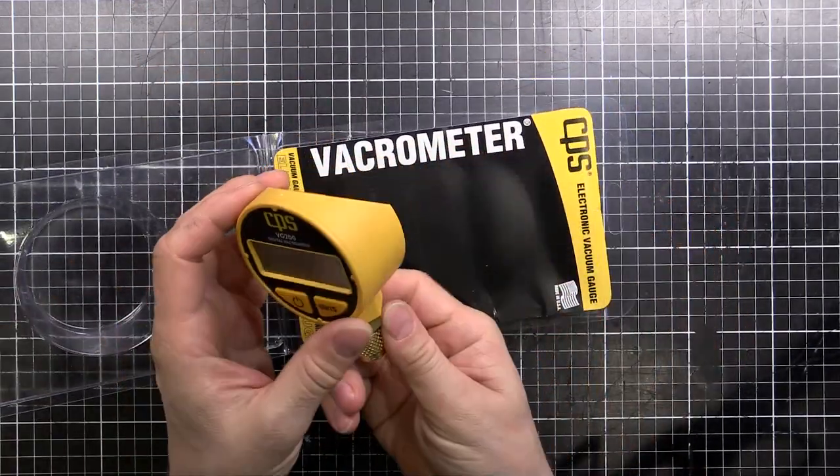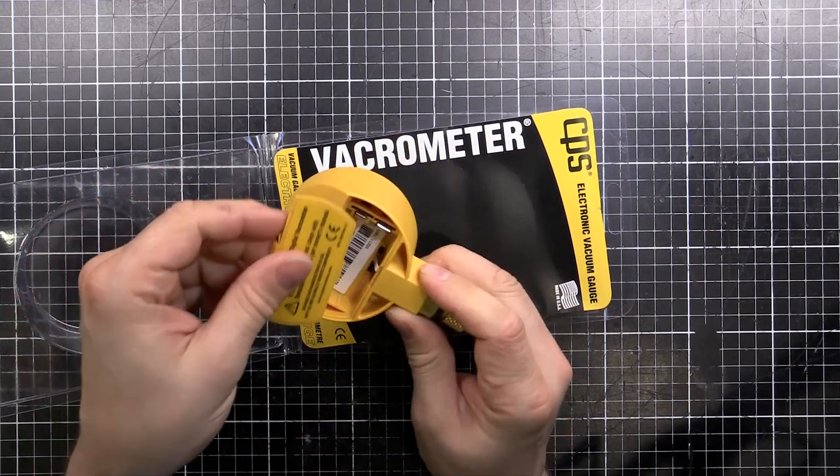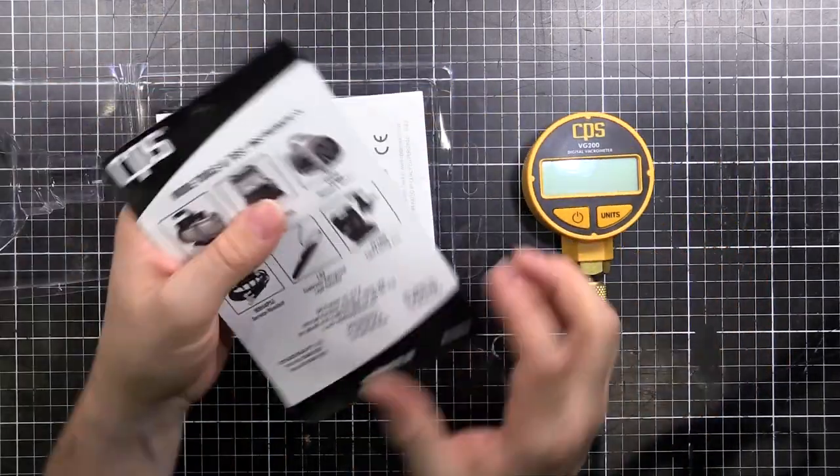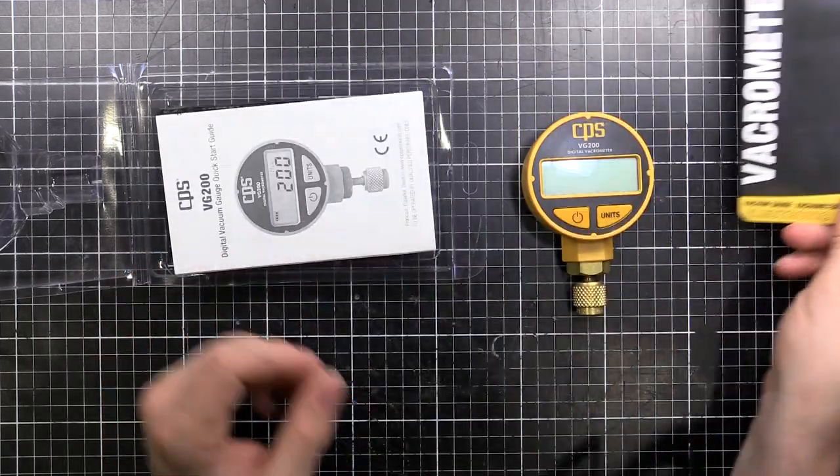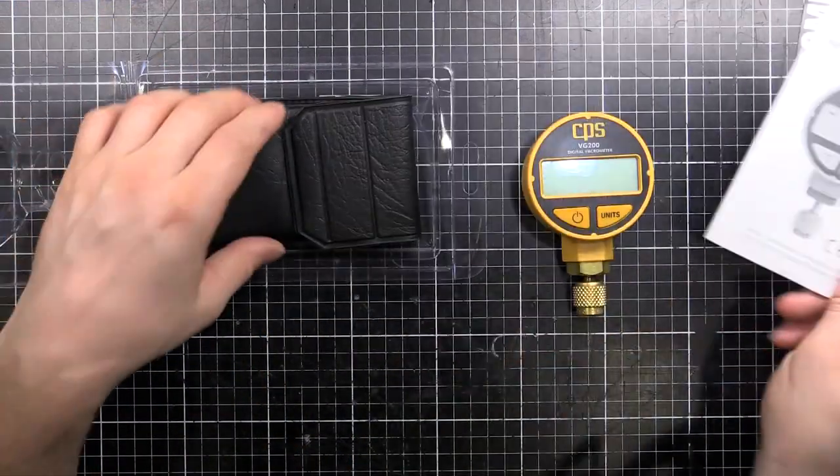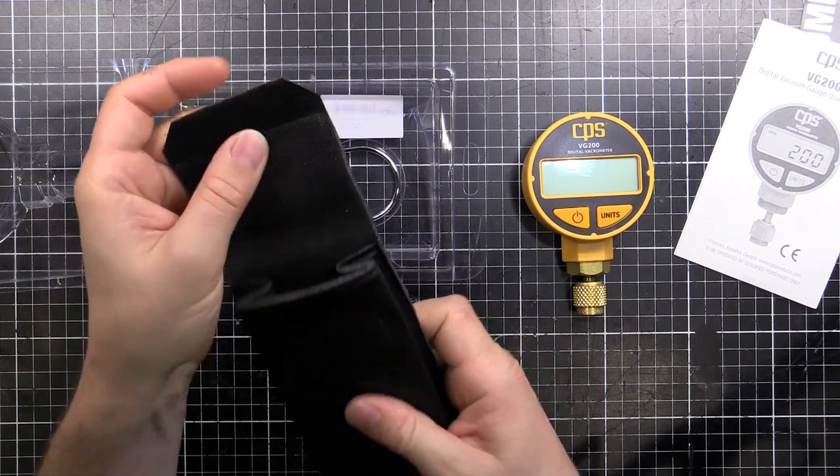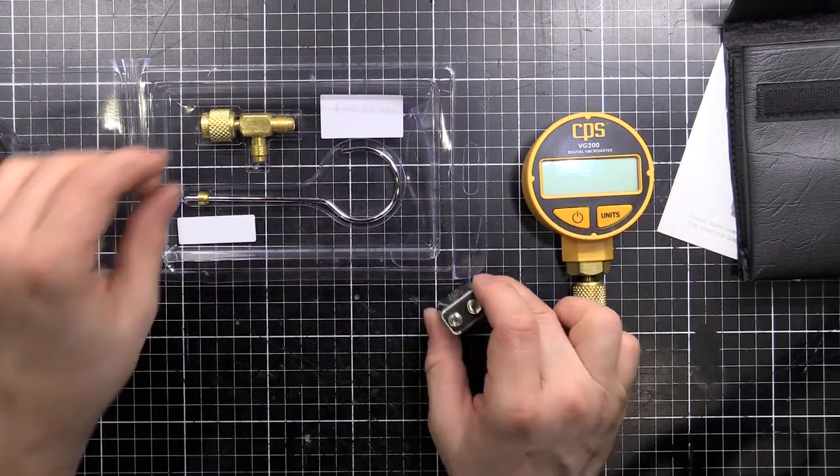Inside the pack we've obviously got the unit. It takes a 9 volt battery in the back here. And we've also got a few other bits. There's just a card here with some advertising for the other equipment. User manual. A pouch. Nice and foam lined to keep it safe. Comes with a battery even. Energizer. Good brand too.